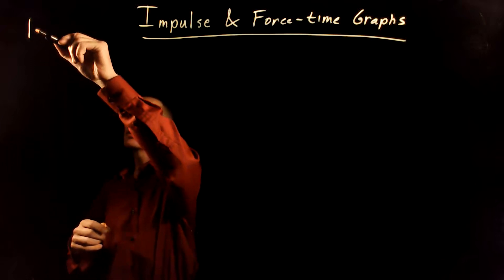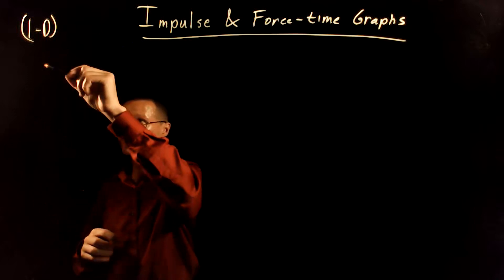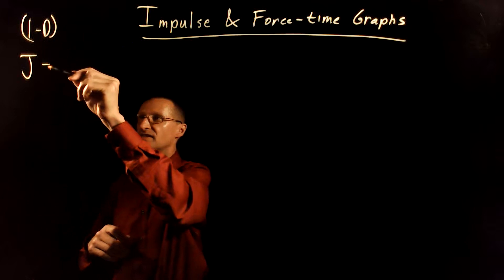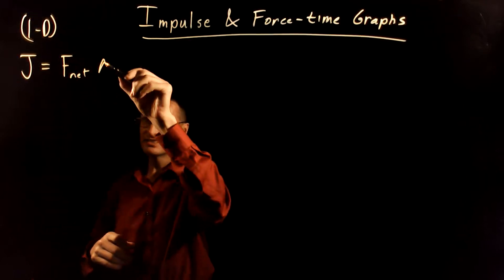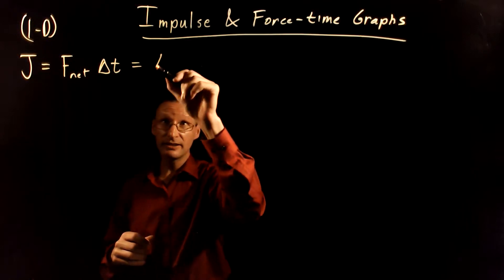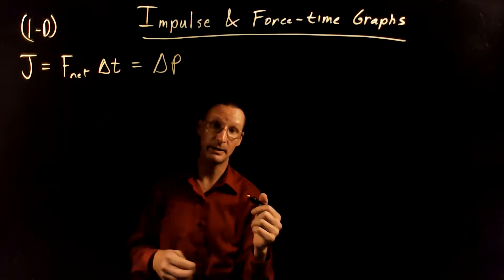So first, let's start out with a simple one-dimensional situation here, just to keep it simple. And let's think about what the definition of the impulse is. That is the net force acting on an object times the time interval over which that force acts. And when you compute that, that's going to give you the change in momentum of the object over that time interval.